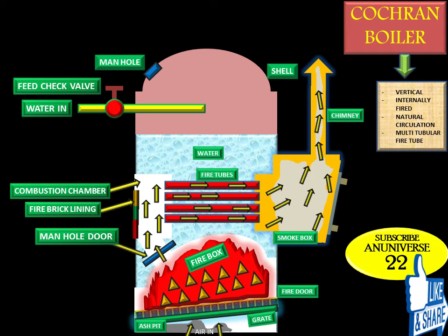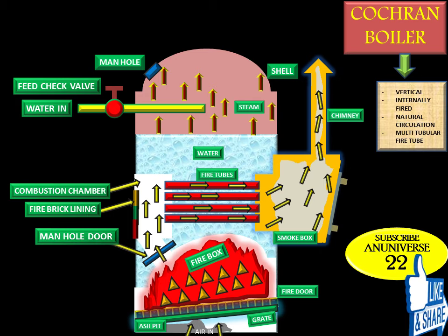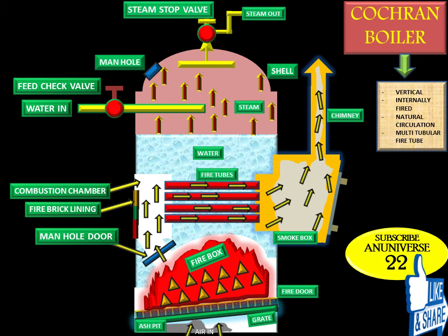Some mountings are also fitted to the boiler, like the feed check valve as discussed earlier. The steam stop valve regulates the flow of steam supply to requirements. It is also used to control the flow rate of steam from the boiler and to shut off the steam flow completely if required.